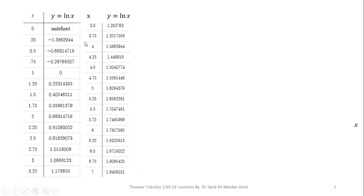In order to plot the graph of y is equal to natural log of x, we can use different values of x in this equation. Note that the natural log function is undefined at x equal to 0 or any negative value. If you substitute x with any negative value, for example natural log of minus 1, it will be undefined. So natural log of x is defined only for values greater than 0.